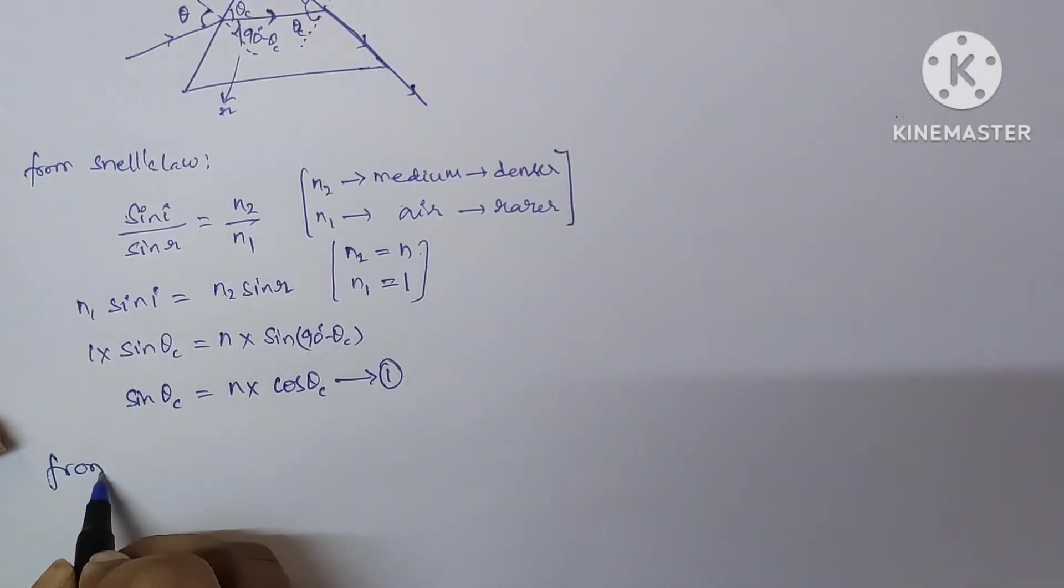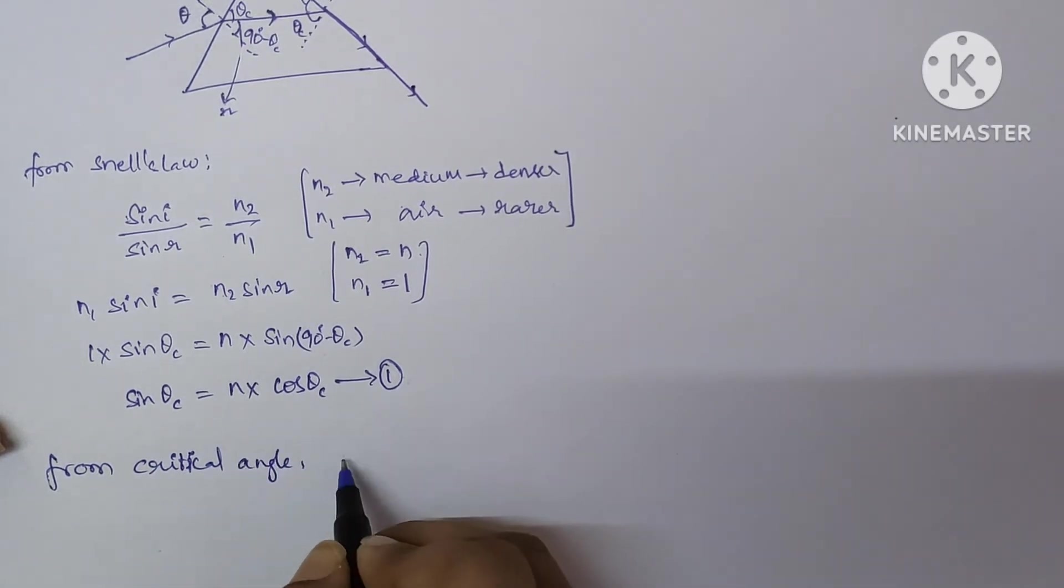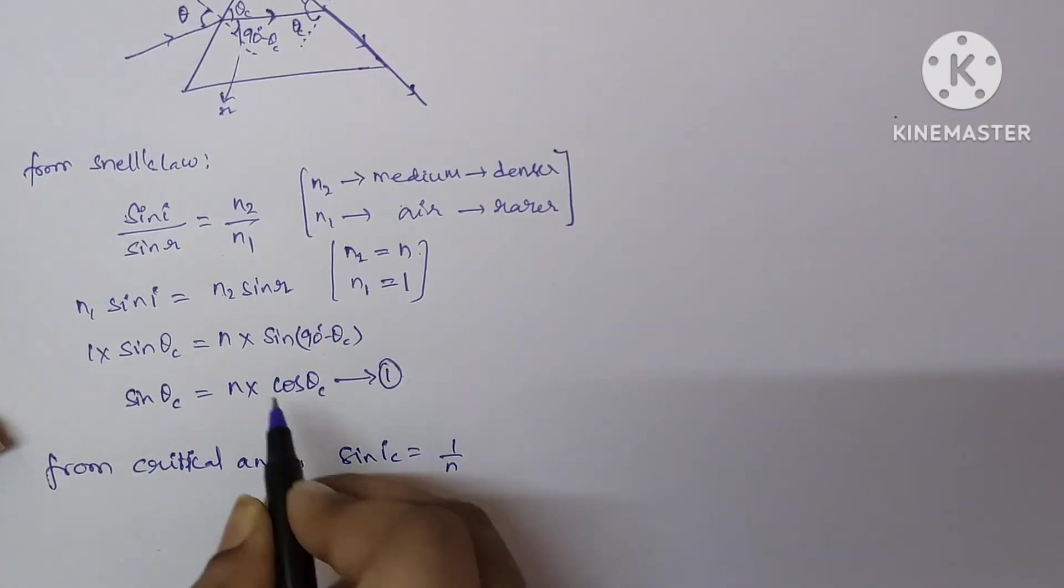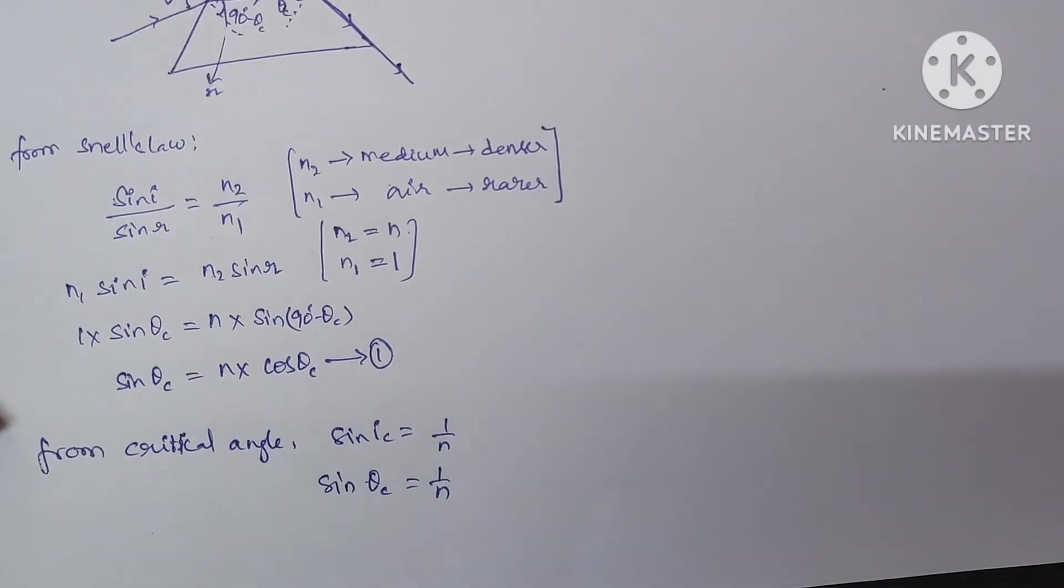From the formula of critical angle, we know that sin i c is equal to 1 by N. According to this problem, I am replacing i c with theta c, which is equal to 1 by N.